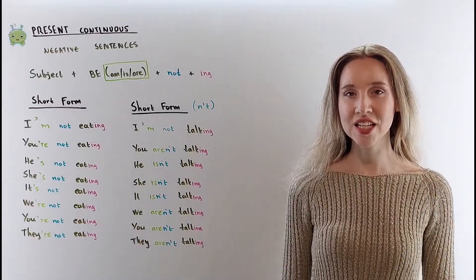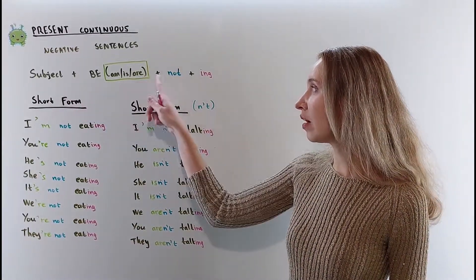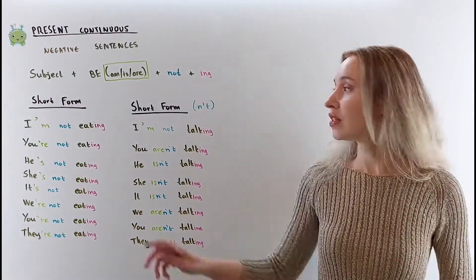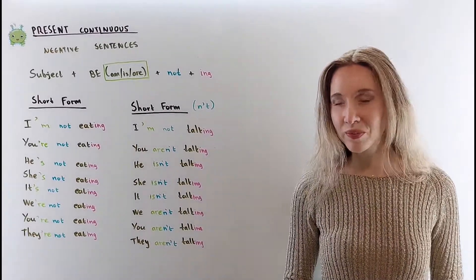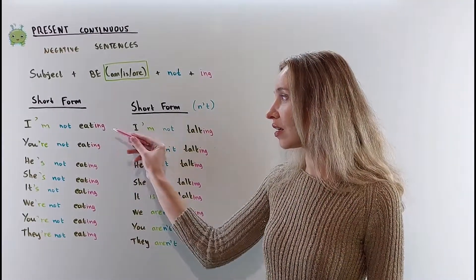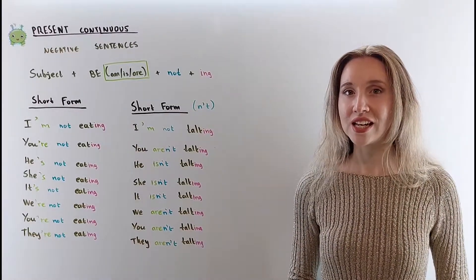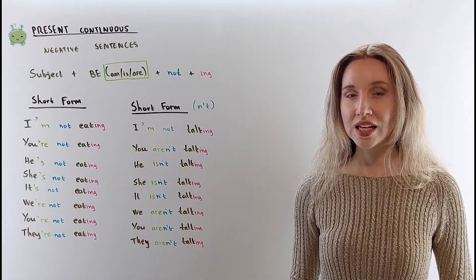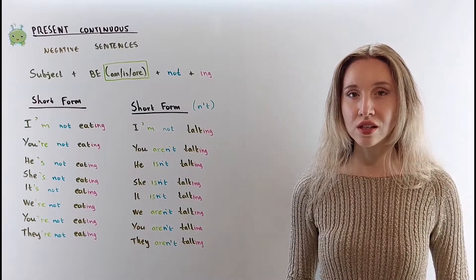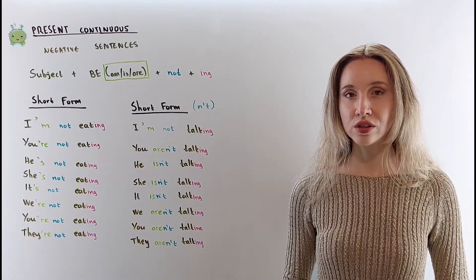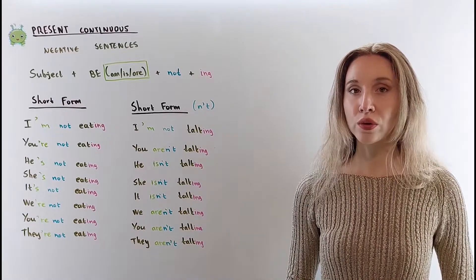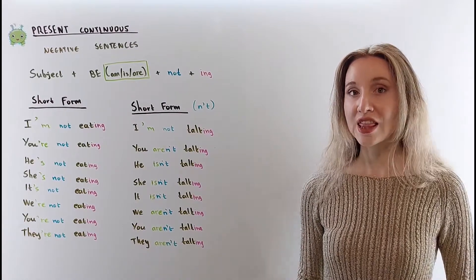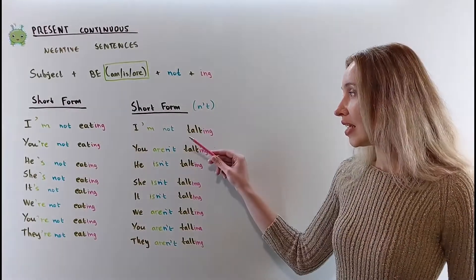For negative sentences, use this construction: subject, am/is/are, NOT, and then ING. We have two possible short forms. Repeat after me: I am not eating, you're not eating, he's not eating, she is not eating, it's not eating, we're not eating, you're not eating, they're not eating.